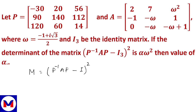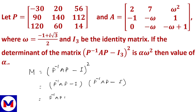So, M squared means the matrix is multiplied twice. Let's expand: (P⁻¹AP - I) times (P⁻¹AP - I), giving P⁻¹AP minus I, into P⁻¹AP minus I. Expanding: P⁻¹AP into P⁻¹AP, minus P⁻¹AP into I, minus I into P⁻¹AP, plus I into I, which is I squared.